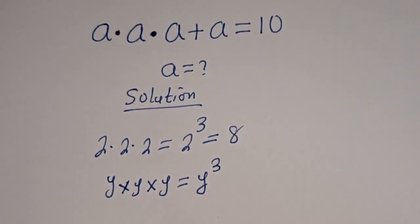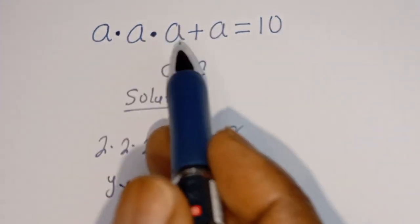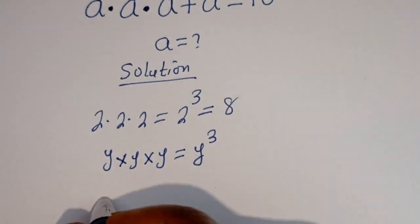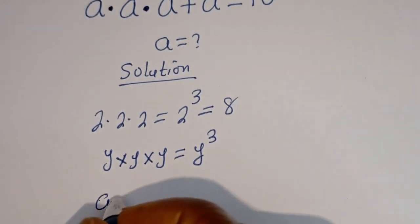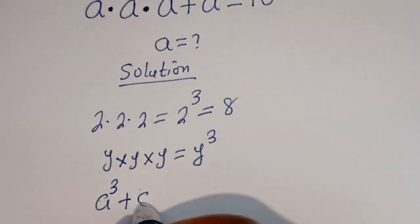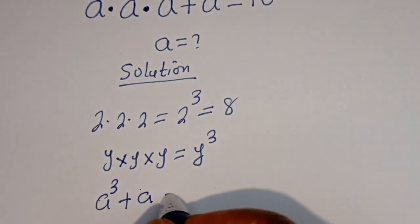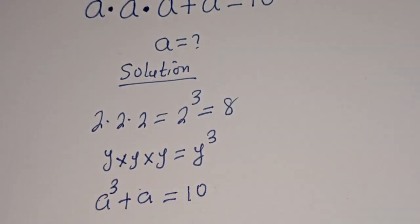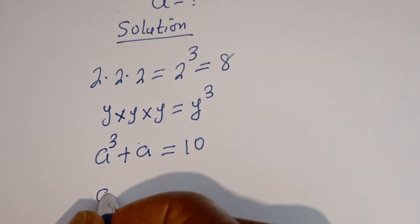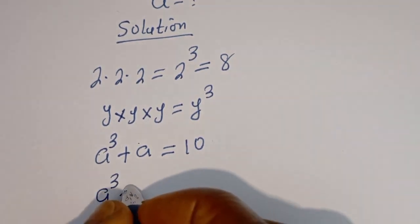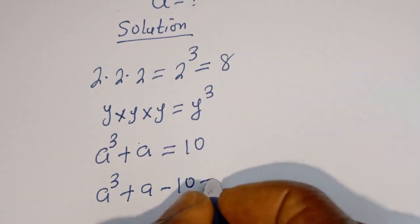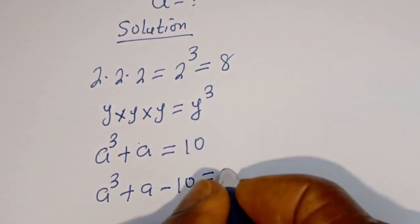Therefore, A multiplied by A multiplied by A is A to the power of 3, plus this A is equal to 10. Then this is A to the power of 3 plus A minus 10 is equal to 0.